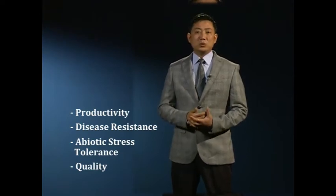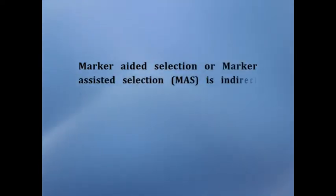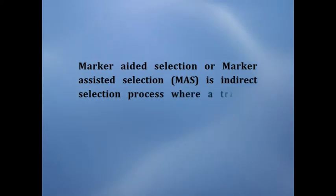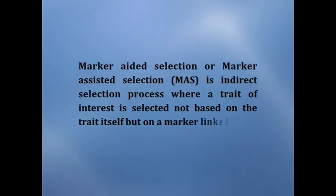This process is used in plant and animal breeding. Considerable developments in biotechnology have led plant breeders to develop more efficient selection systems to replace traditional phenotypic pedigree-based selection systems. Marker-aided selection is an indirect selection process where a trait of interest is selected not based on the trait itself but on a marker linked to it.